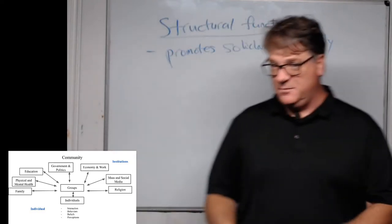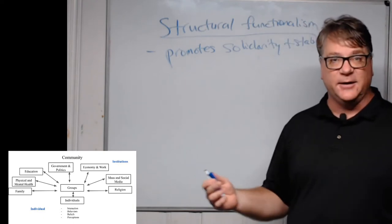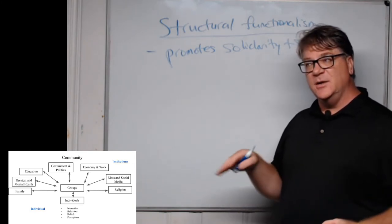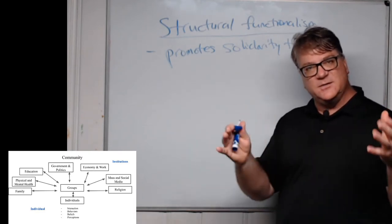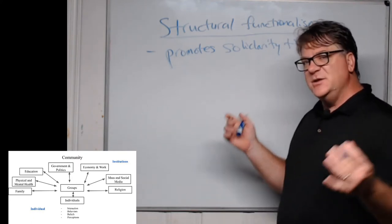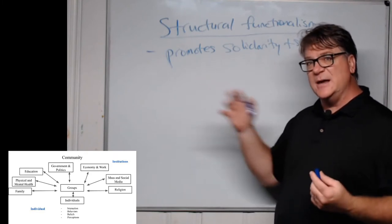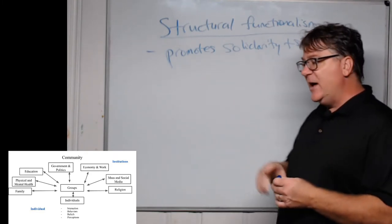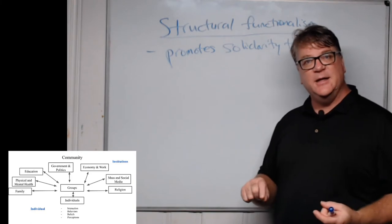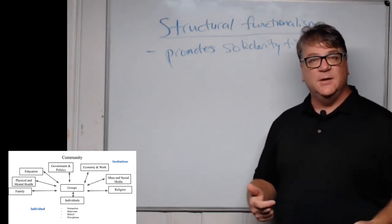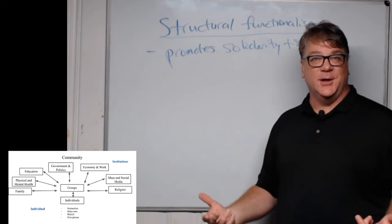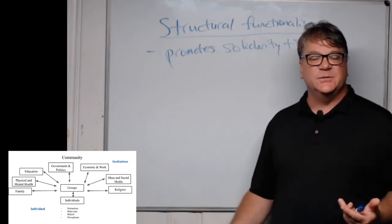In this theoretical approach you might think about how this is accurate or maybe how it's inaccurate, and that's okay. There are all kinds of approaches built from these three major ones, so there are a lot of different ways of looking at social and individual phenomena. For example, thinking about family and the economy, you can go into a lot of detail about how social institutions work together to promote solidarity and stability — for example, the government, education, and the economy.